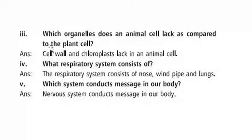The answer is: animal cells lack the cell wall and chloroplast as compared to plant cells. The cell wall is the outermost covering part of plant cells. Animal cells do not have the cell wall, chloroplast, or chlorophyll that plant cells possess.